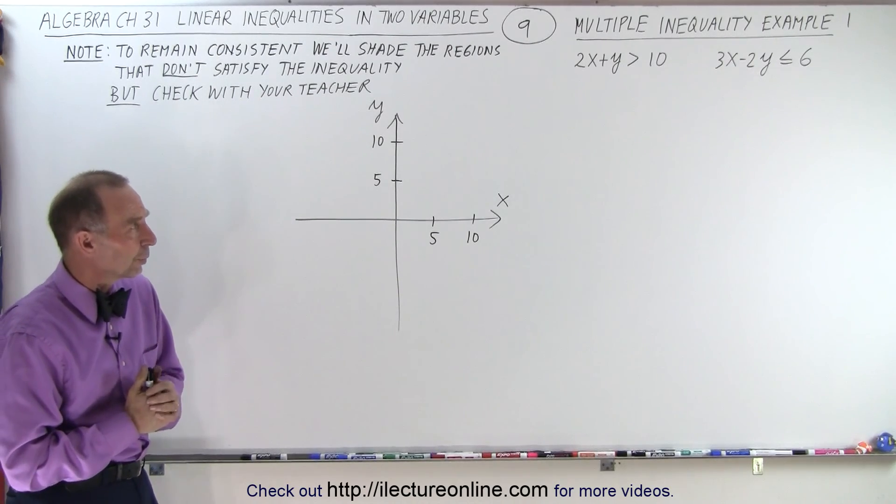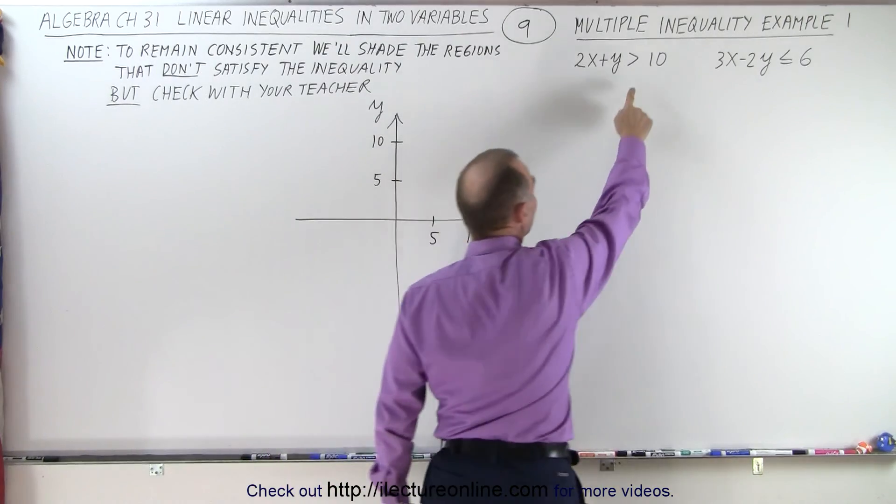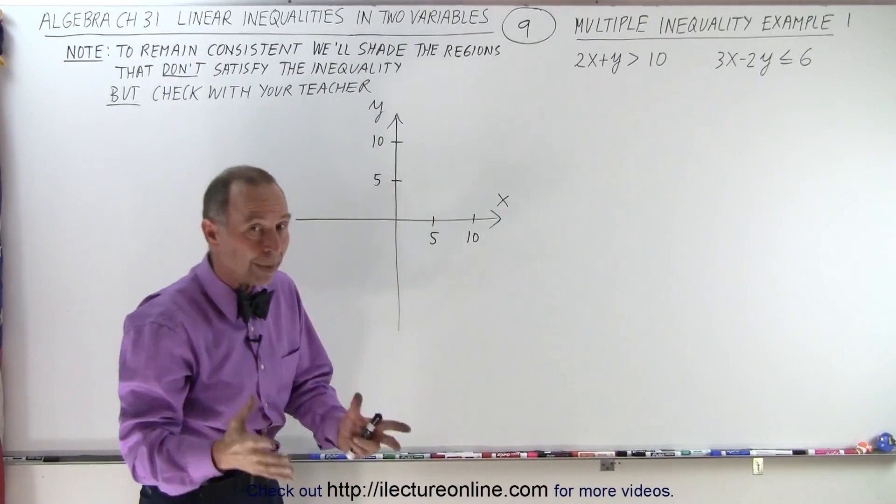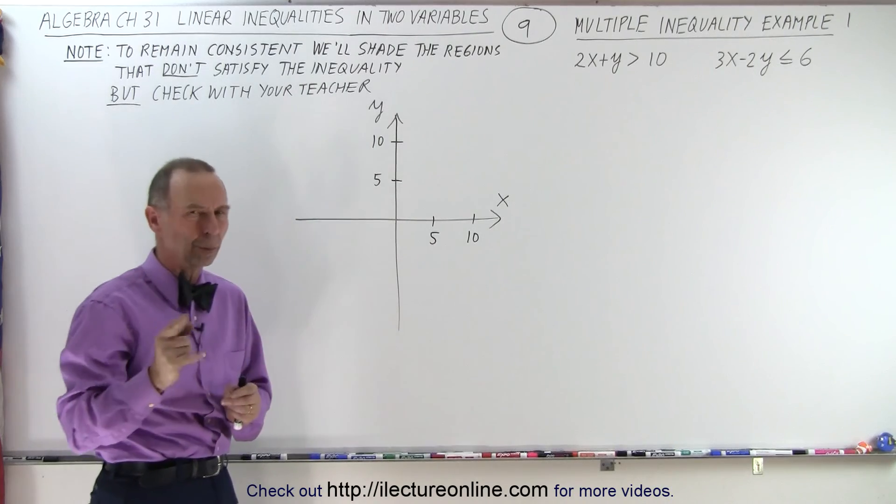Here are the two inequalities we're going to deal with. Notice that one of them does not have the equal sign. That means one of the lines we're going to draw as a boundary line will not be a solid line, will be a dashed line.